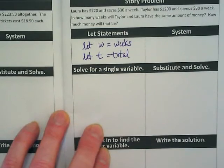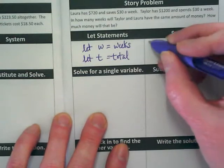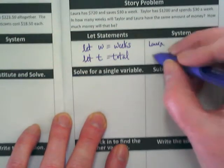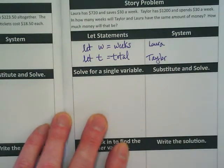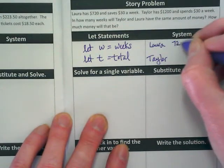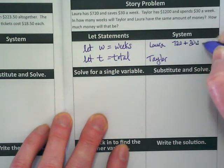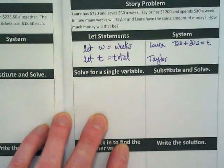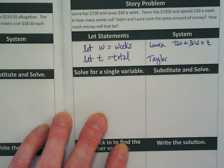The system is two equations you write that come from the word problem. In this case, I'm going to write an equation for Laura and an equation for Taylor. Laura has $720 plus she's adding $30 every week, and it equals the total. We don't know what that total is yet because we don't know the number of weeks.